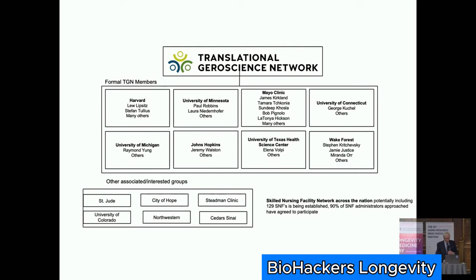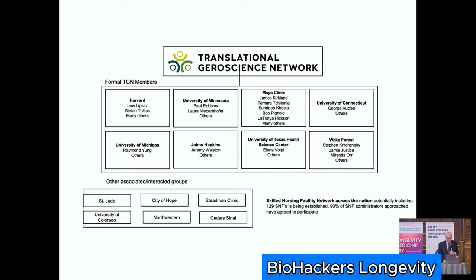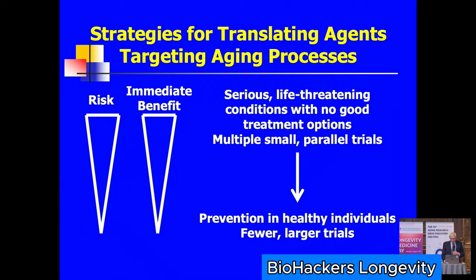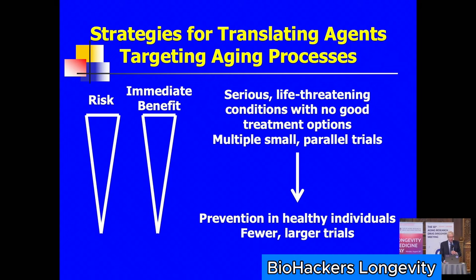One of the things established to investigate whether these interventions might be translatable into humans is the Translational Geroscience Network, which is NIH funded. It started off with eight institutions and now has involved many others. The notion is to use interventions — lifestyle interventions, repurposed agents, natural products, or new chemical entities — to target fundamental aging processes in the context of very serious conditions for which there are no good treatments, because we don't know the downsides of these things and we're worried about risk-benefit ratio.